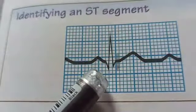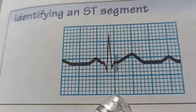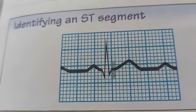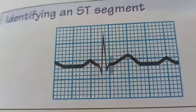The ST segment begins at the J point and extends to the start of the T wave. It may vary from 0.5 to 1 millimeters.